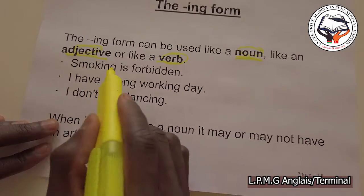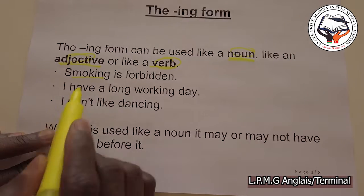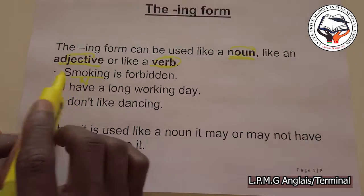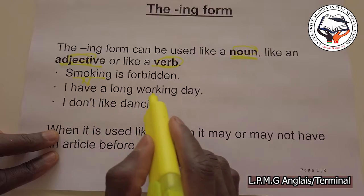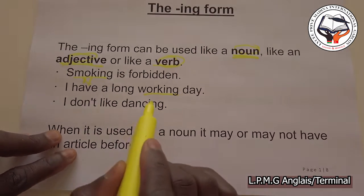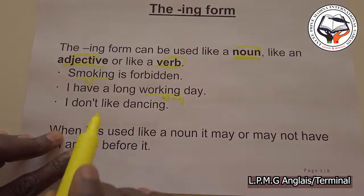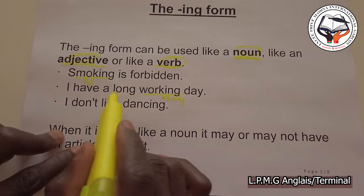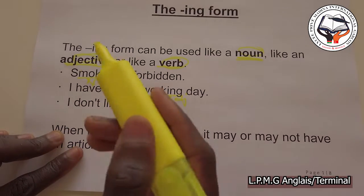The first example deals with the noun: 'Smoking is forbidden.' Smoking here is a noun. The second example: 'I have a long working day.' Working here is an adjective. A long working day — 'working' is used as an adjective, and 'day' is the noun.